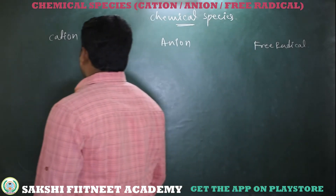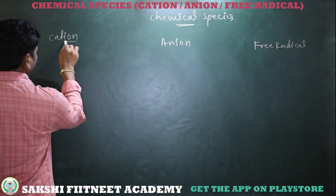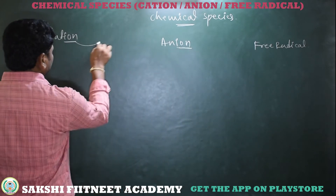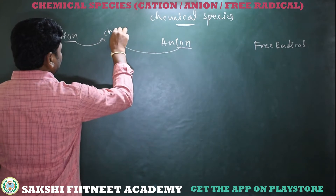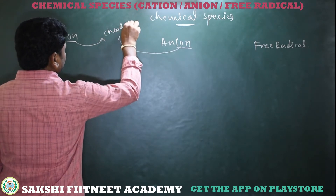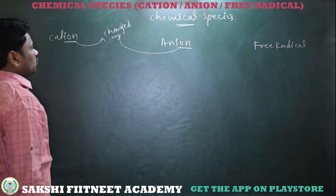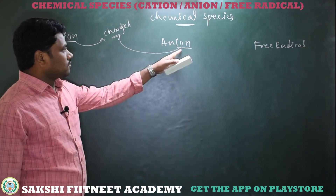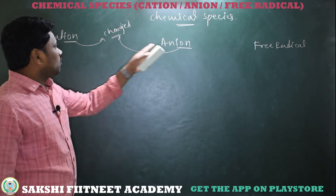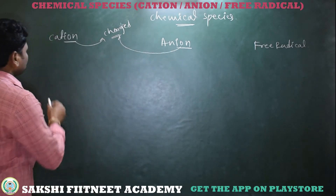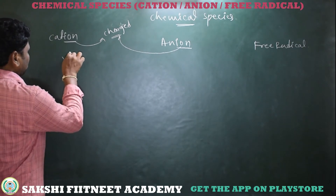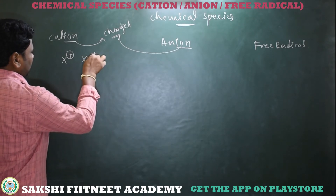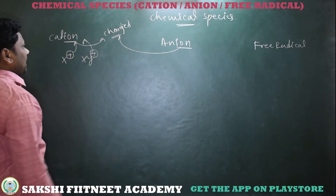Free radical. Simply here, the suffix '-ion' means which exist as an ion. So what is meant by ion? Nothing but which are charged. The element or group of elements which have a positive charge or negative charge are called ions. So what is a cation? Assume this is an element which has a positive charge, or a group of elements which has a positive charge — that is called a cation.